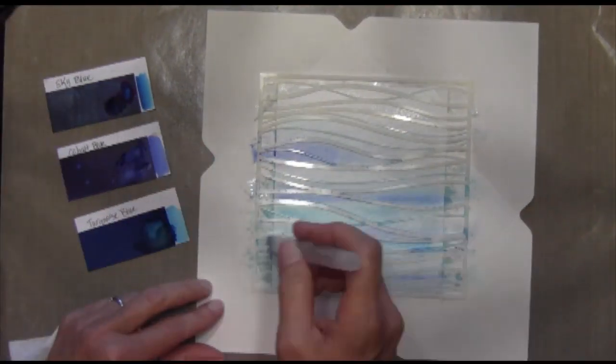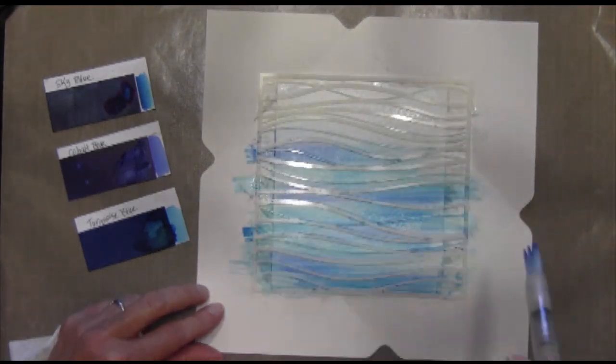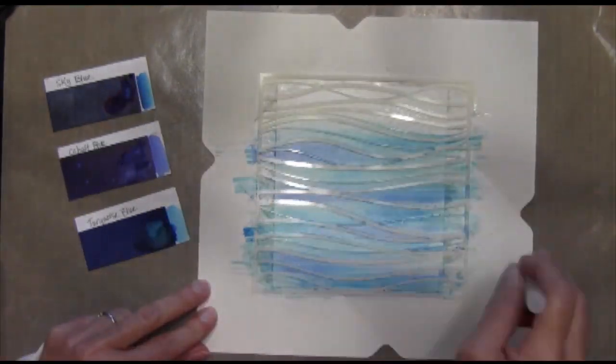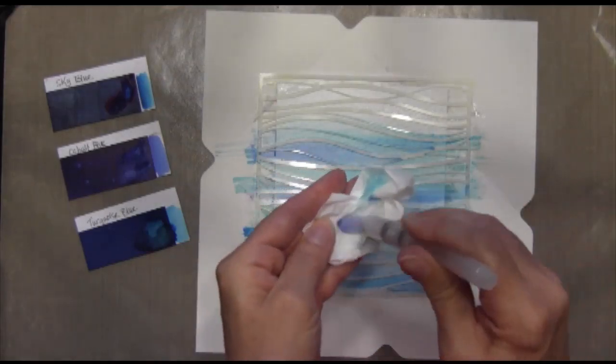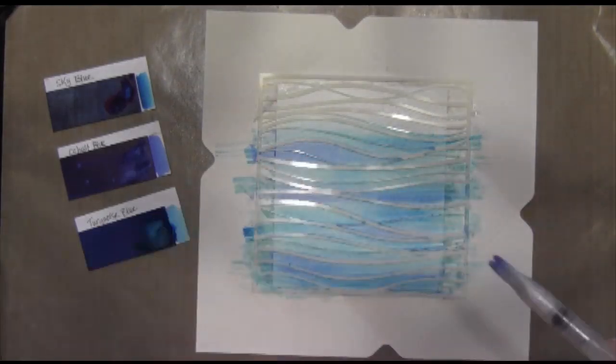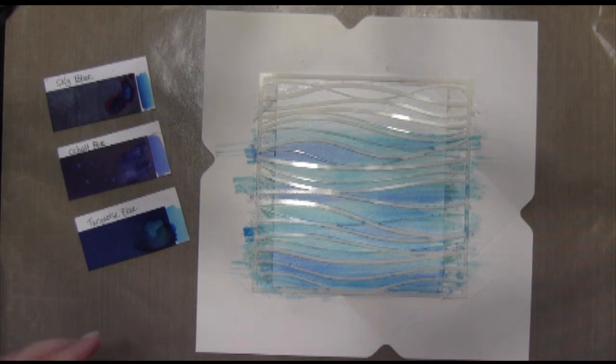And I started off with a turquoise blue and I just randomly put a bunch of blue lines and then I moved to the cobalt blue and randomly did some of that. And then finally the sky blue. And I'm just wiping it, even though it stained the tip of my brush, it's okay. It comes off.